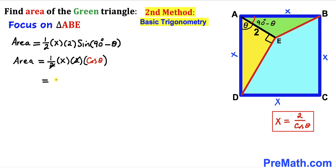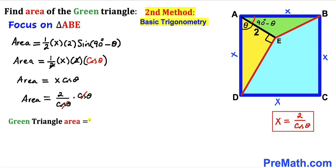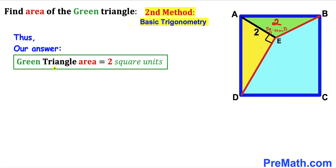We know x equals 2 divided by cosine of theta, so substituting gives us 2 divided by cosine theta, times cosine of theta. The cosine of theta terms cancel, so the area of this green triangle turns out to be 2 square units by this second method as well. That's our final answer. Thanks for watching and please don't forget to subscribe to my channel for more exciting videos.